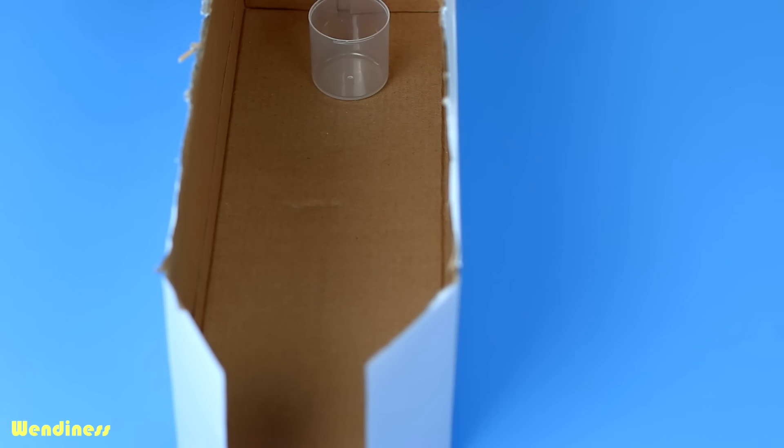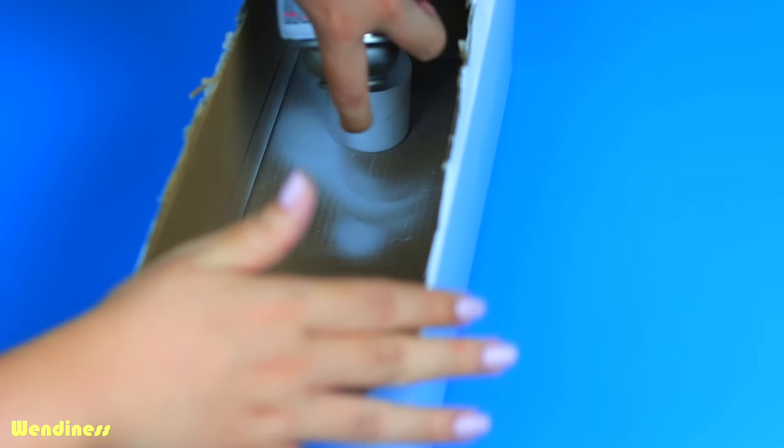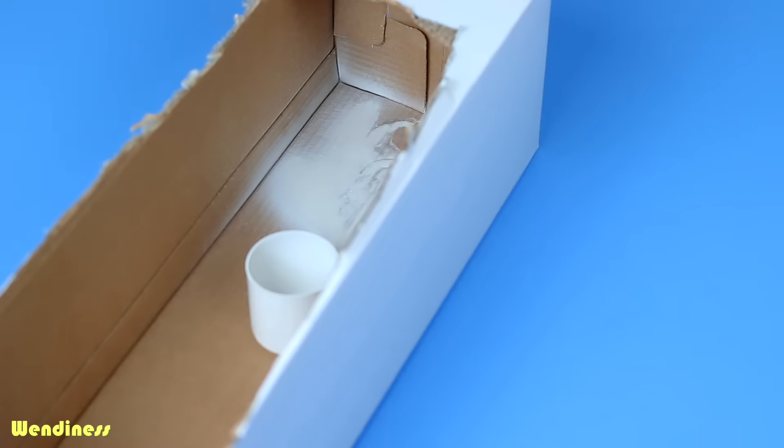Now first thing you're going to do is spray paint the base white color. I did this indoors just because I wanted to show you guys on video under lighting, but I recommend you doing this outside of course.